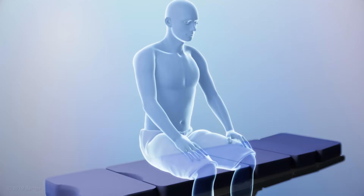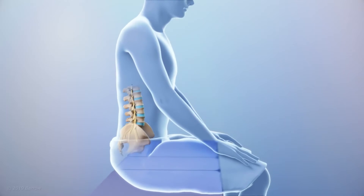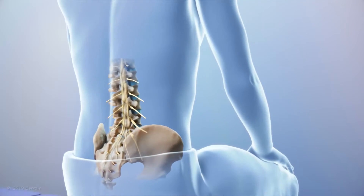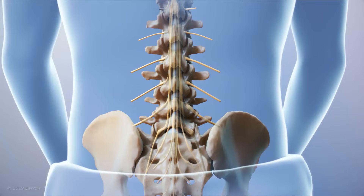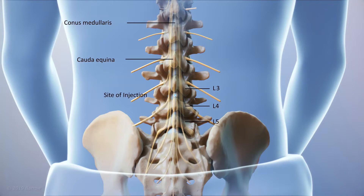Here's an animation of the lumbar puncture. It's often performed in the office setting or in the radiology suite. The patient is asked to lay on their side or maintain a seated position. The needle must avoid important neurologic structures such as the nerve roots, the cauda equina, and the end of the spinal cord called the conus medullaris. Generally, the procedure is performed at the L3-L4 lumbar space, which is well below the conus medullaris.